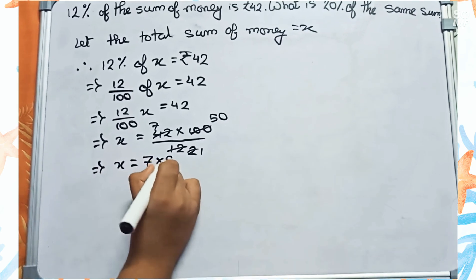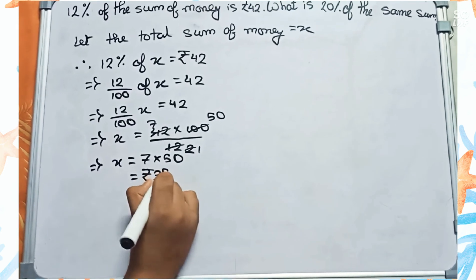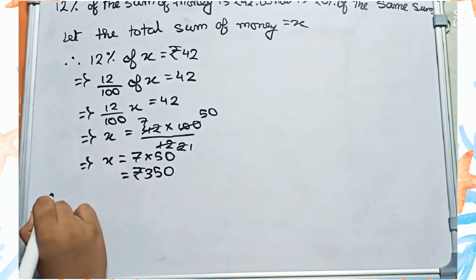Equals to rupees 350. So this is the total sum. Now I have to find out 20 percent of 350.